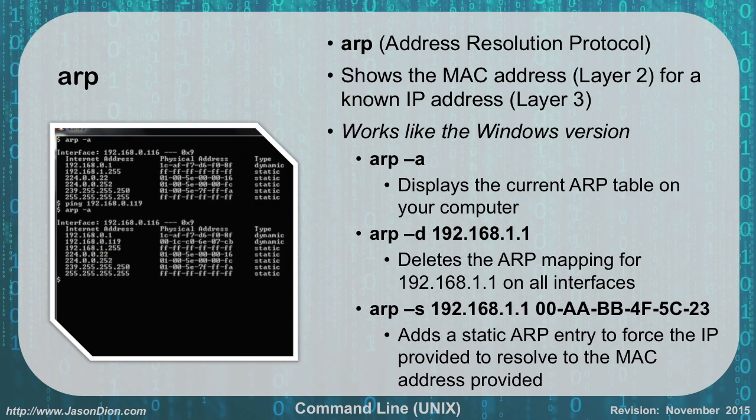The first command is ARP, which stands for Address Resolution Protocol. It shows you the MAC address at layer 2 for a known layer 3 address. 'arp -a' will display the current ARP table, 'arp -d' followed by the IP will delete the mapping, and 'arp -s' will create a static mapping, just like in the Windows version.